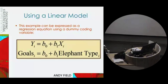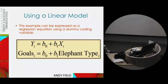This is what our model looks like — a very familiar linear model. We're predicting an outcome, in this case the number of goals scored, from a predictor variable. We could replace X with 'elephant type' — whether it was an Asian or African elephant. This variable can be two values: zero for Asian, one for African. The question is what happens to the intercept and to the gradient — what do these beta values represent when we use categorical variables?